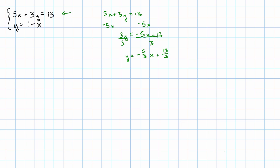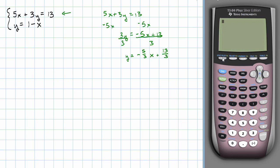Okay. How do we get the table on the calculator again? We press y equals. The first equation is negative 5 thirds x plus 13 thirds. The second equation is y equals 1 minus x.